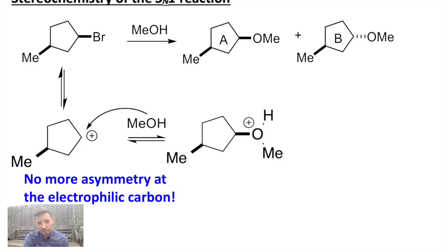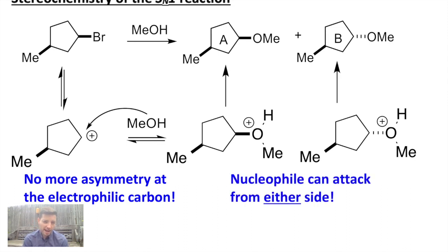So we have two possible intermediates where methanol has formed a bond, one from the top and one from the bottom. In other words, the nucleophile can attack from either side. There's no stopping it because the bromine leaves, or the leaving group leaves, whatever it is, and the nucleophile can come in from either side. We don't have stereoselectivity. So we lose stereochemistry in the SN1 reaction. That's the first thing to mention.